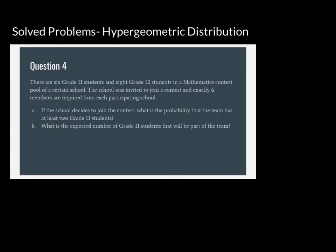The problem says: there are 6 grade 11 students and 8 grade 12 students in a mathematics contest pool of a certain school. The school was invited to join a contest and exactly 4 members are required from each participating school, so not all members of the pool can join. Question A: what is the probability that the team has at least 2 grade 11 students? And question B: what is the expected number of grade 11 students that will be part of the team?